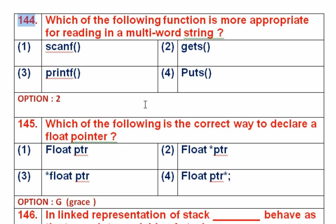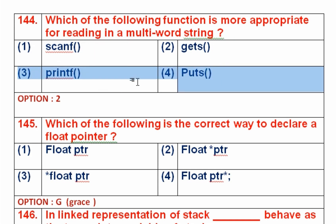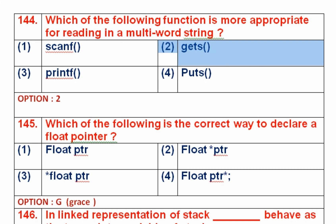Question number 144: Which function is most appropriate to read a multiple-word string? Option 1 is scanf, option 2 is gets, option 3 is printf, option 4 is puts. Printf and puts are for writing, so they are out of scope. Scanf is a formatted input function that reads multiple values of different data types. Gets reads a full line of text which may contain one or more words. So gets, option 2, is the right answer.